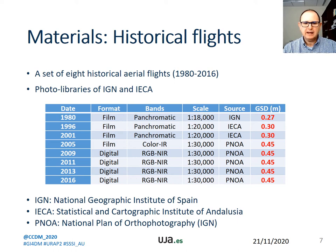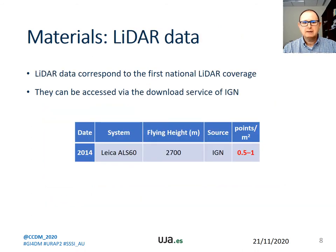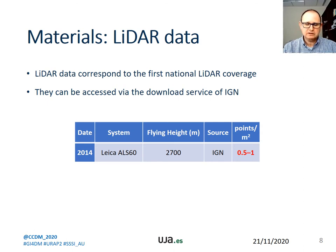Regarding the materials, a set of 8 historical aerial flights from 1980 to 2016 from different cartographic agencies were used, with resolution between 0.27 and 0.45 meters. The images were downloaded from the photolibraries of the National Geographic Institute of Spain and the Statistical and Cartographic Institute of Andalusia. LIDAR data corresponds to the first national LIDAR coverage, captured in 2014 in the Andalusia region with a resolution of 1.5 square meters per point, accessible via the download service of the Geographic Institute.